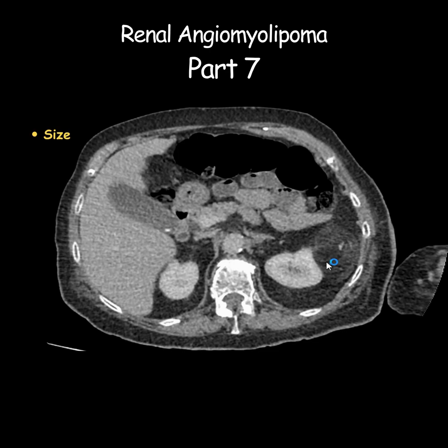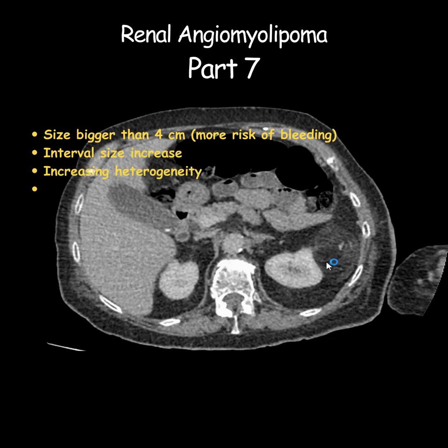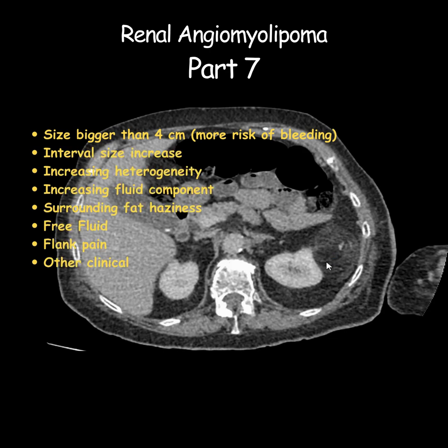So how do we determine that the lesion has bled? We would look for increasing heterogeneity, development of more fluid component, or enlargement of the size over interval imaging studies. And clinically, patients might present with flank pain or other signs of retroperitoneal hemorrhage.